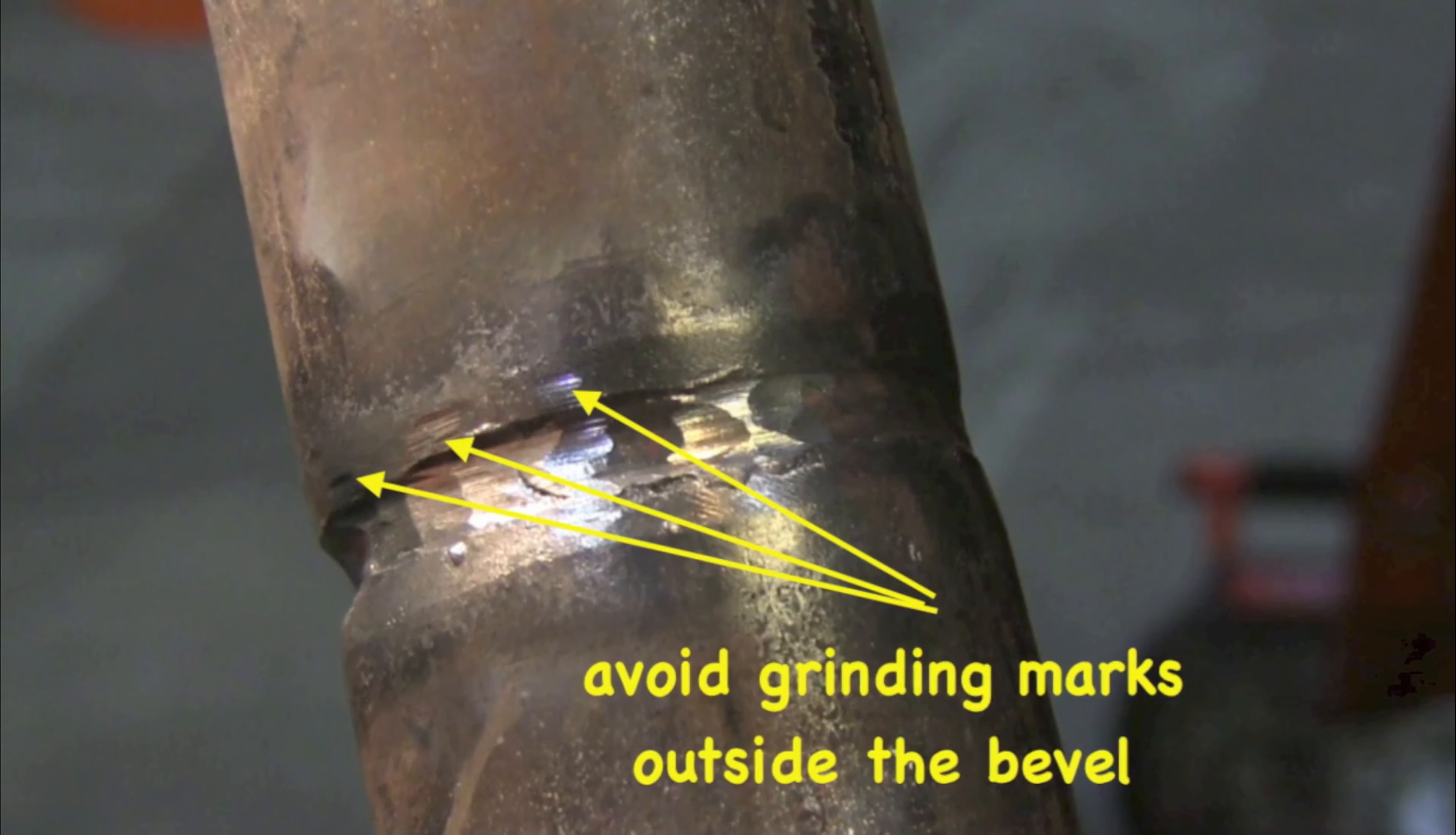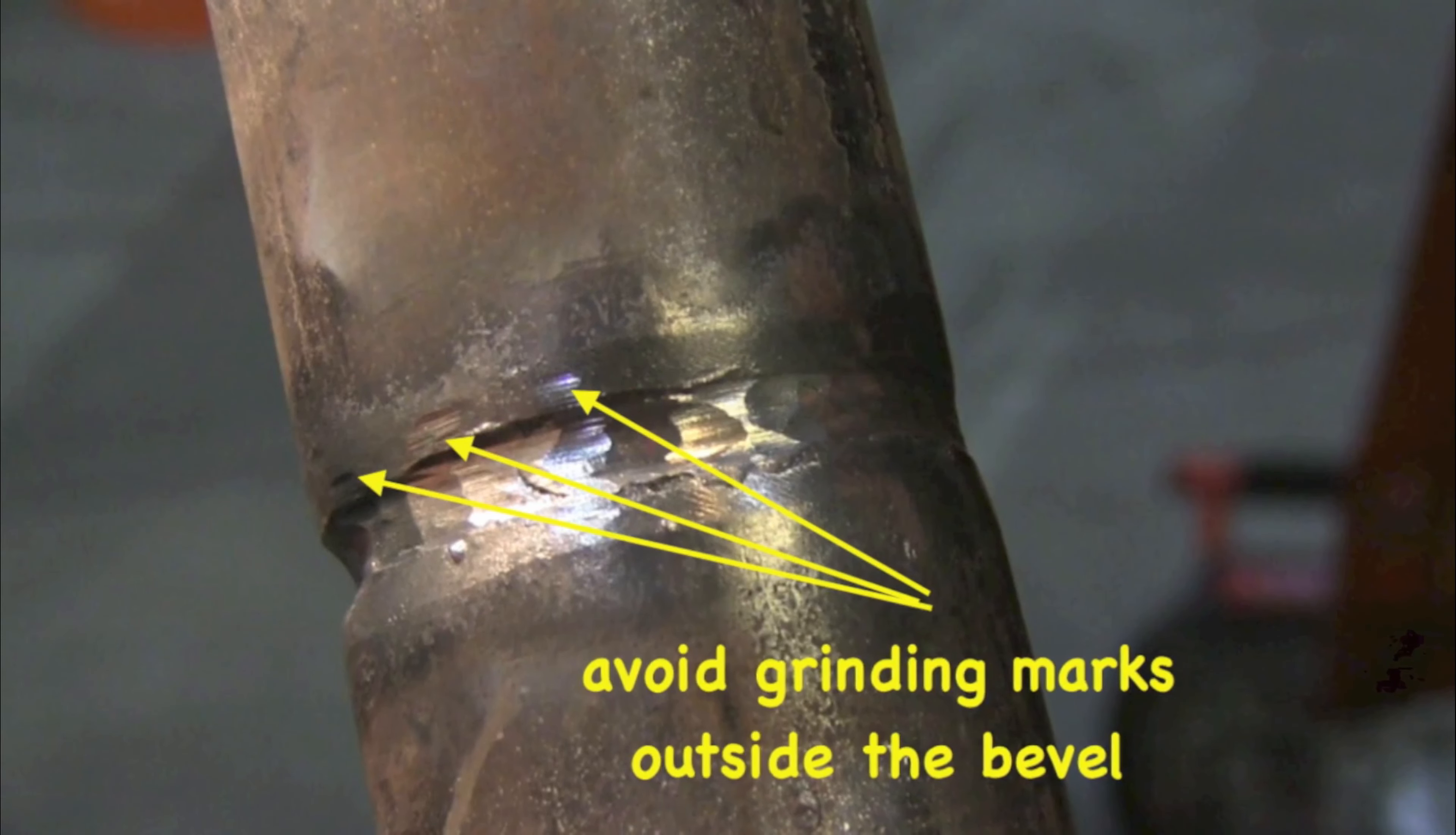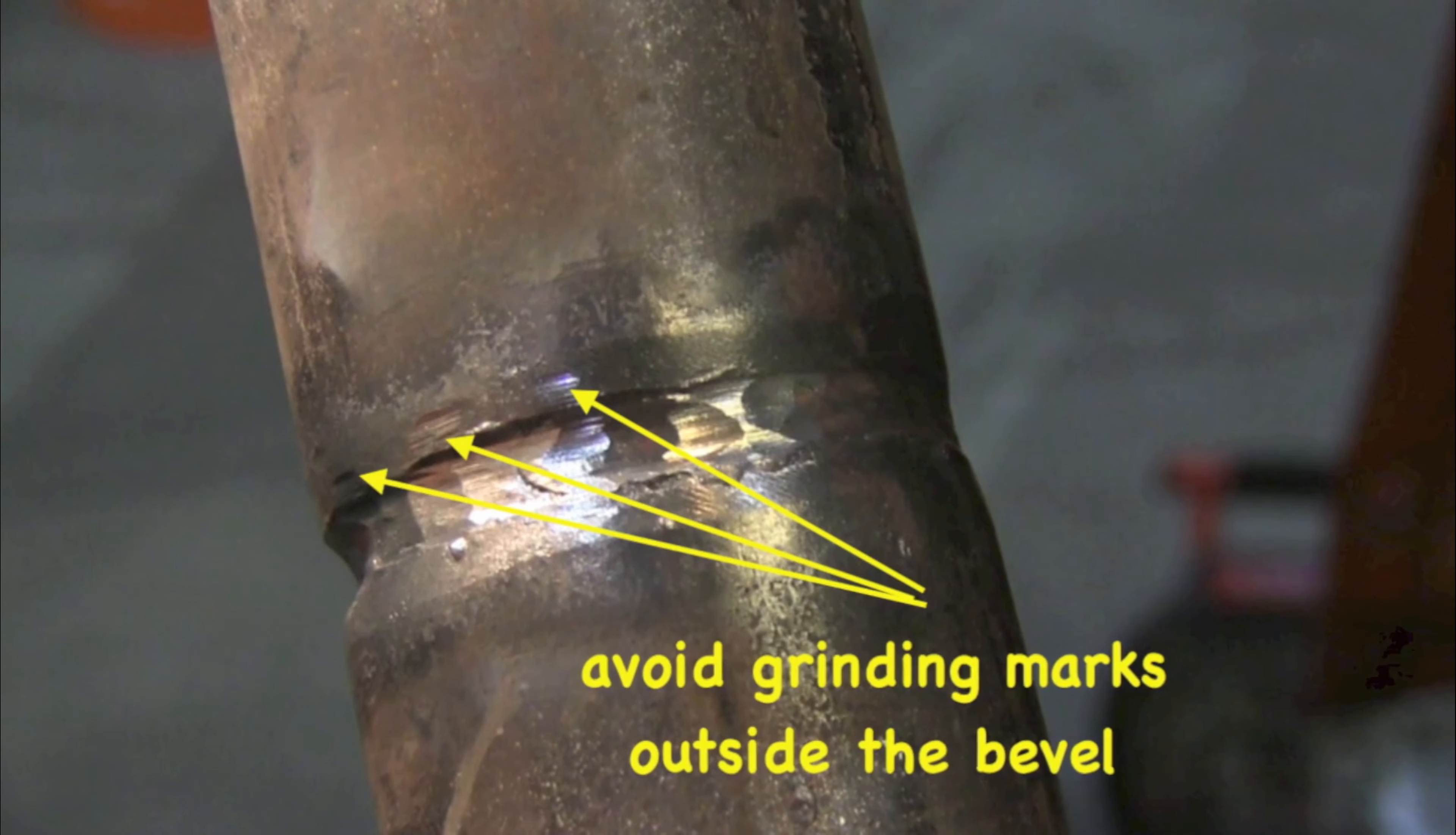If you're going to use a grinder, you definitely want to be really careful and avoid getting grinding scratches outside the bevel. We didn't really have the right grinding wheel here for this video. We're trying to get by with a flap disc and use the rigid part of it just to kind of clean up that root pass.